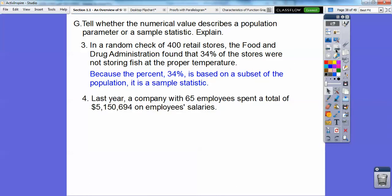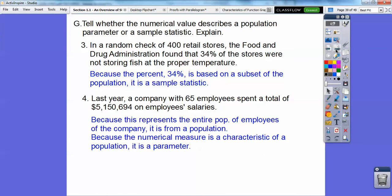Last year, a company with 65 employees spent a total of $5,150,694 on employee salaries. Because this represents the entire population of that employee's company, it's from a population, so it's a population parameter. Because the numerical measurement is a characteristic of that population, that's why it's a population parameter right there.